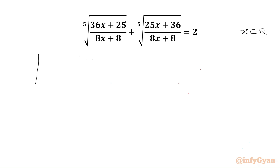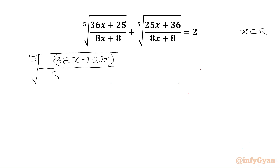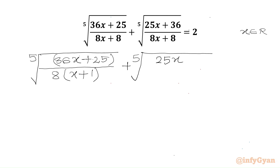I will write our equation first: fifth root of 36x plus 25. In the denominator we can take 8 common out, so I will write in the bracket x plus 1, plus fifth root of 25x plus 36. In the denominator we will take 8 common out, so we write x plus 1 in the bracket. The RHS will be 2.